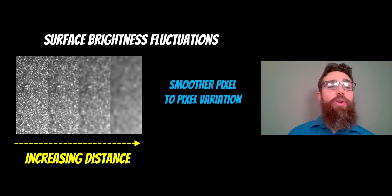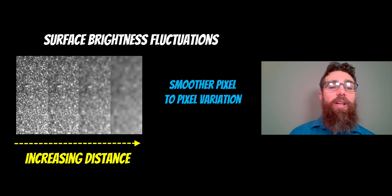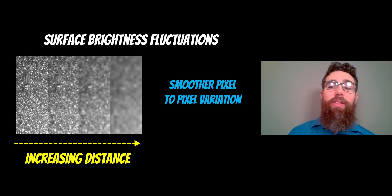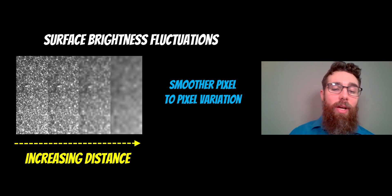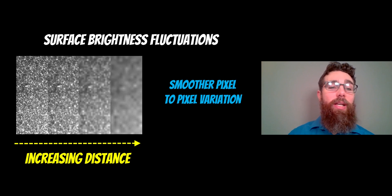If galaxies are relatively close, you can use surface brightness fluctuations. This is basically looking at the resolution of the stars in the galaxy — think about pixels in an image. The closer it is, the better resolution you have. The further away they are, the pixel-to-pixel variation gets smoother. There's a relationship we can use to work out the distance to the galaxy by how smooth that pixel-to-pixel variation is.